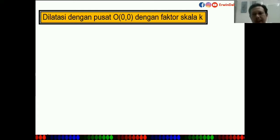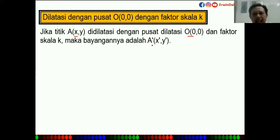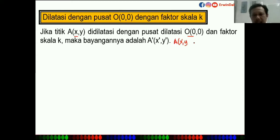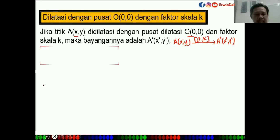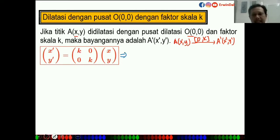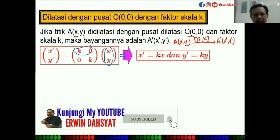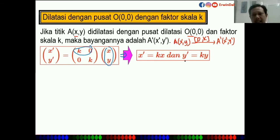Jika titik A(X,Y) dilatasi dengan pusat dilatasi 0 dan faktor skala K, maka bayangannya adalah A'(X', Y'). Rumusnya menggunakan matriks: X' dan Y' diperoleh dari perkalian matriks K dikalikan X sama dengan KX, dan K dikalikan Y sama dengan KY. Karena dilatasi merupakan perkalian, maka X' = KX dan Y' = KY.